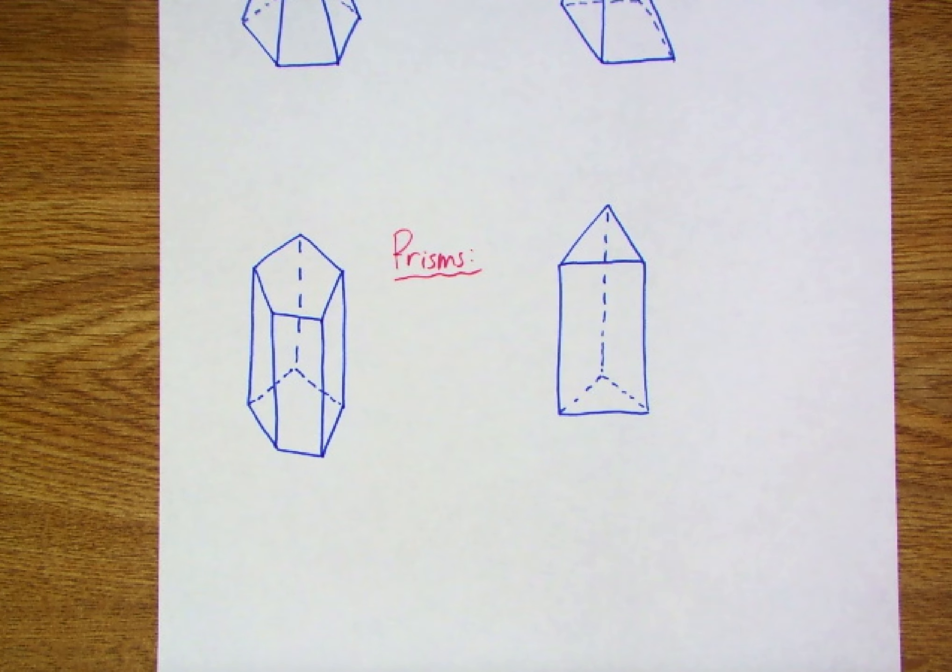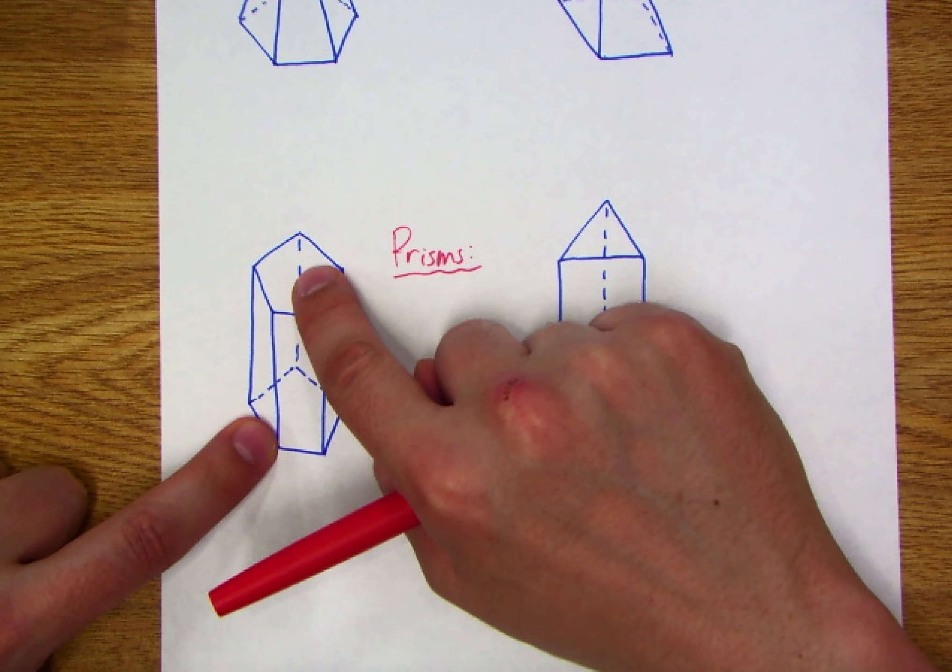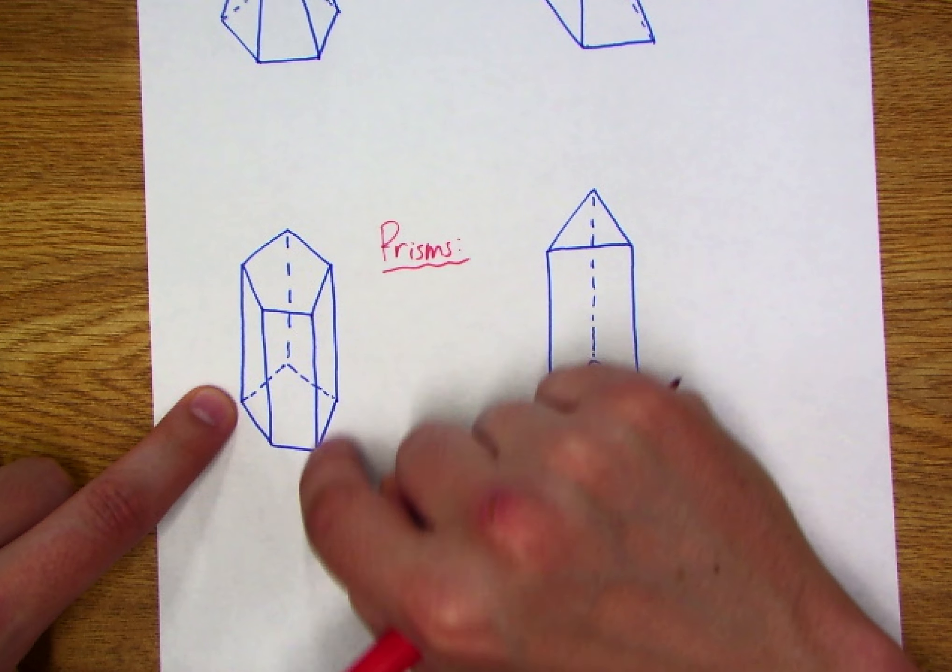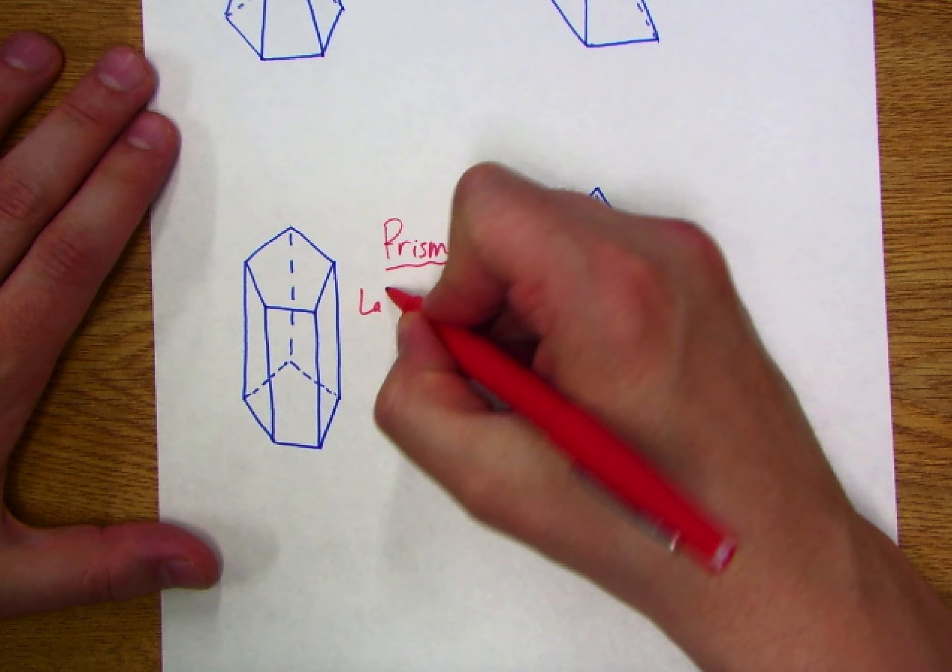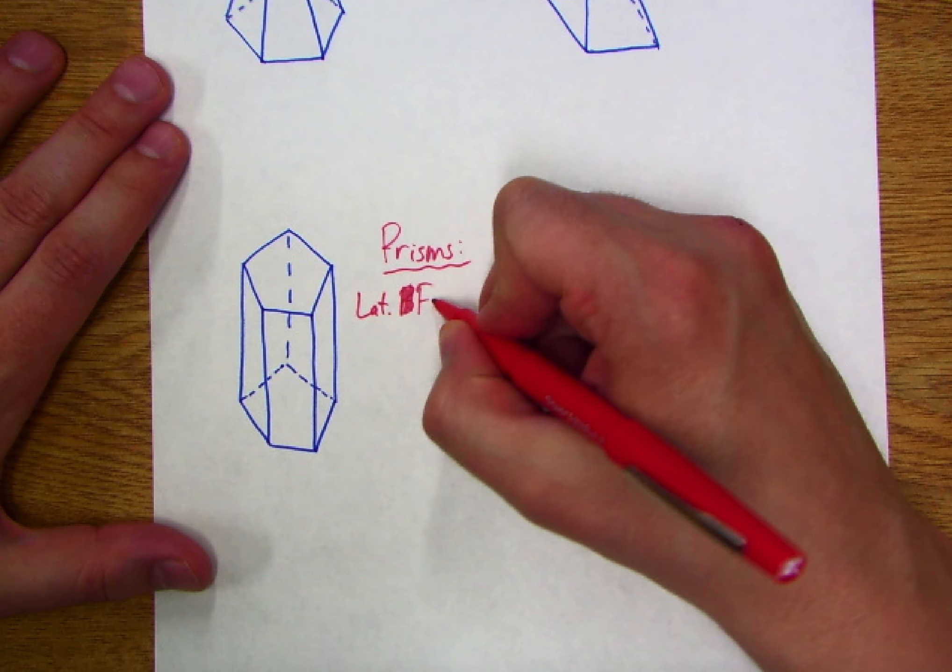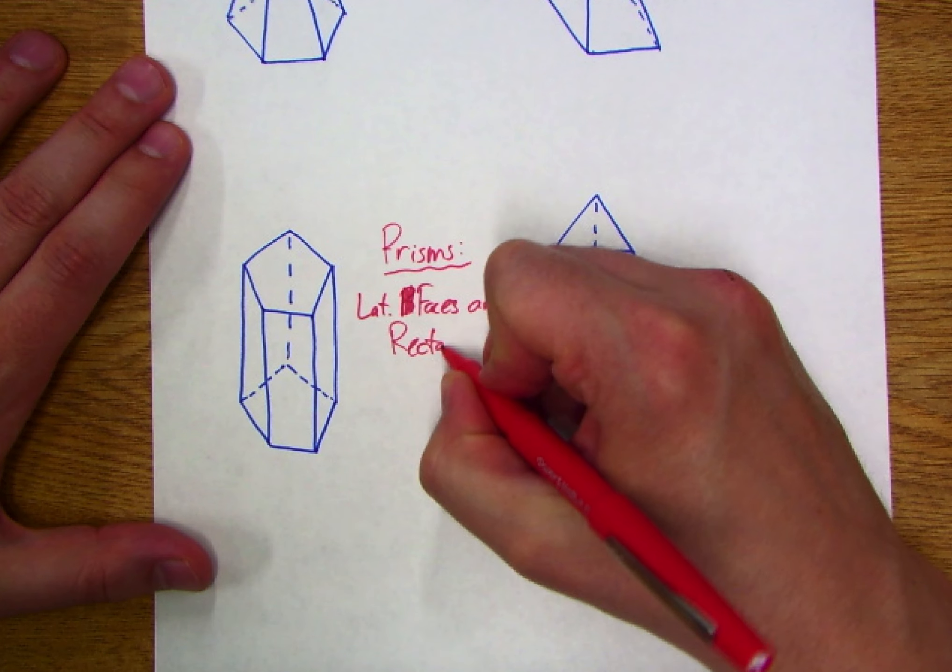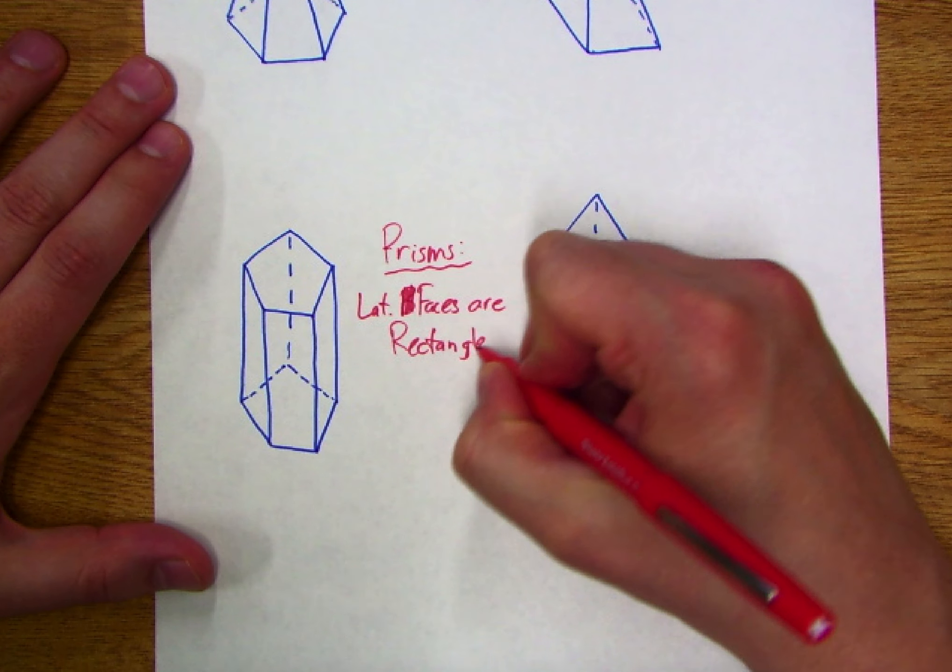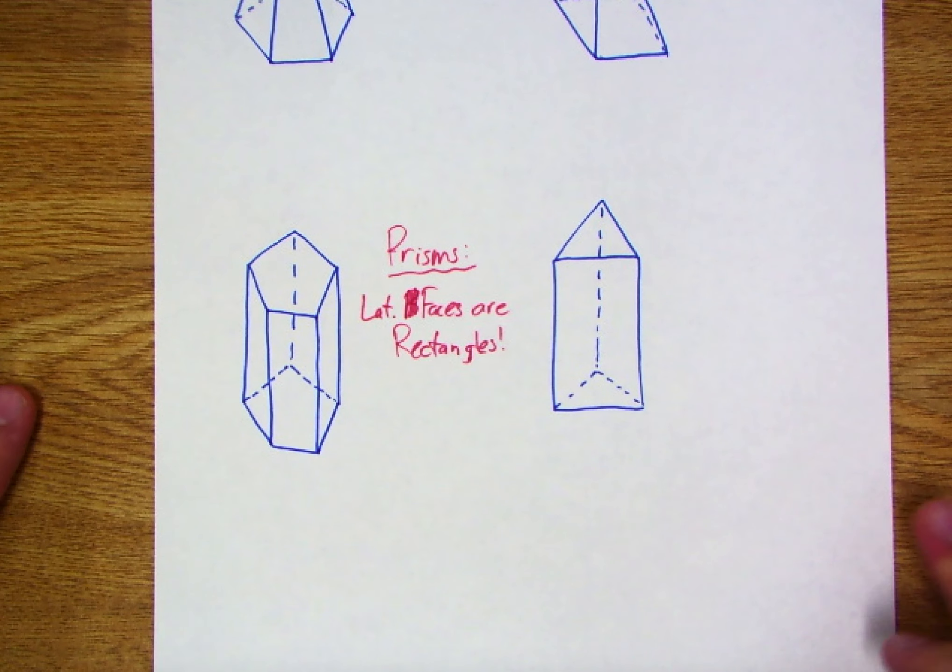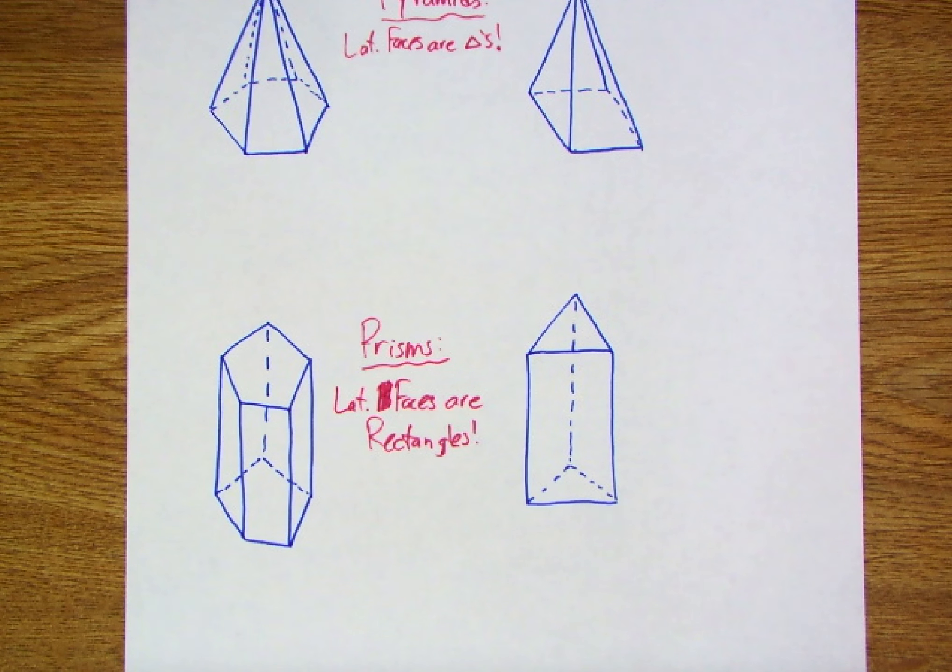That's not the case when we're dealing with prisms. You may notice the one on the left doesn't have any triangles. What's connecting the bases will always come out to be rectangles. So the lateral, not bases, lateral faces are rectangles. And that's the key distinction. That's what you're looking for. Are there these triangles around the figure, or are there rectangles around the figure?